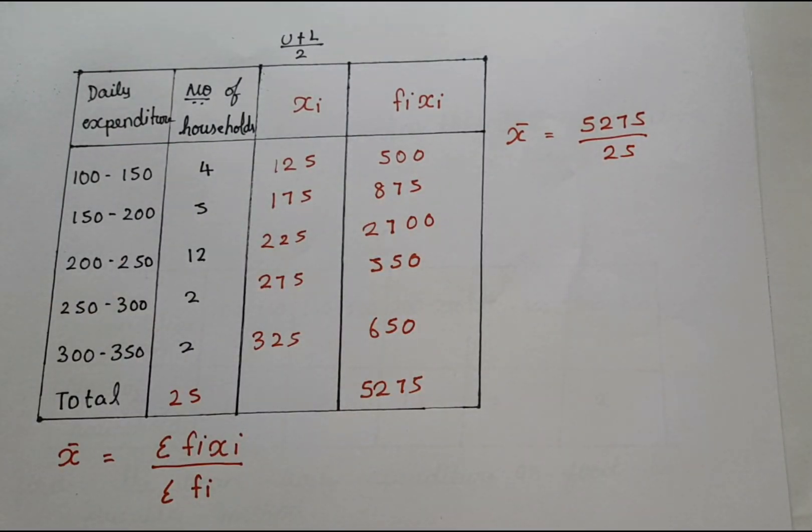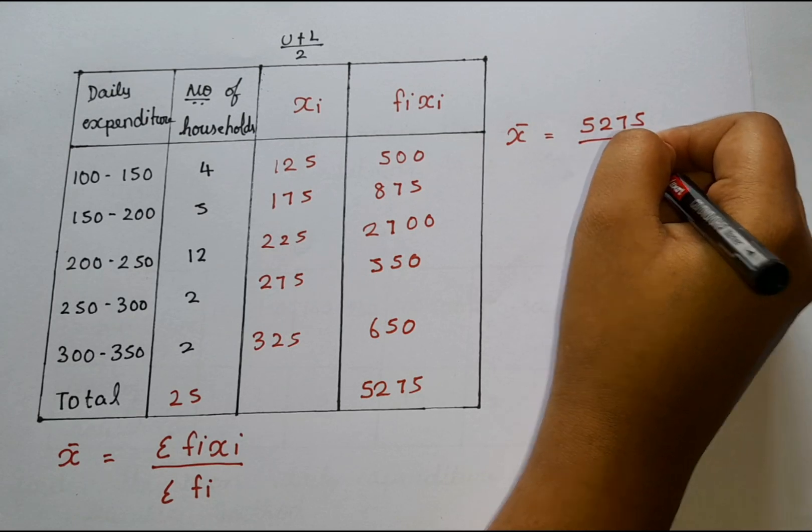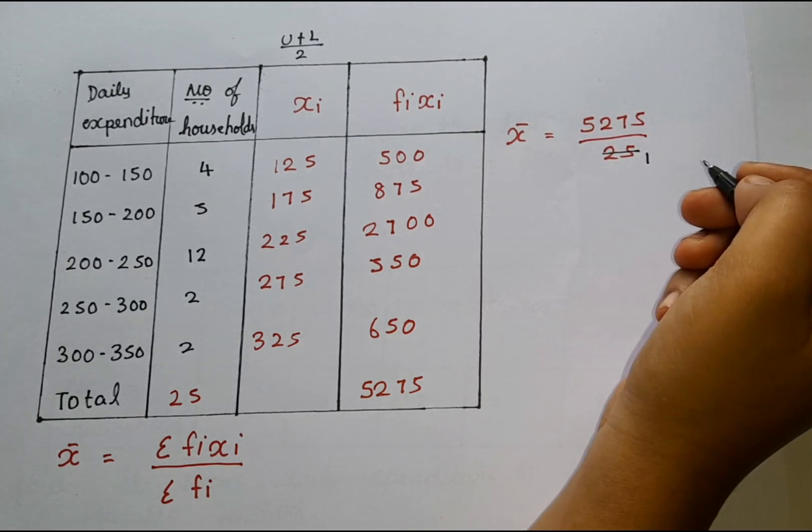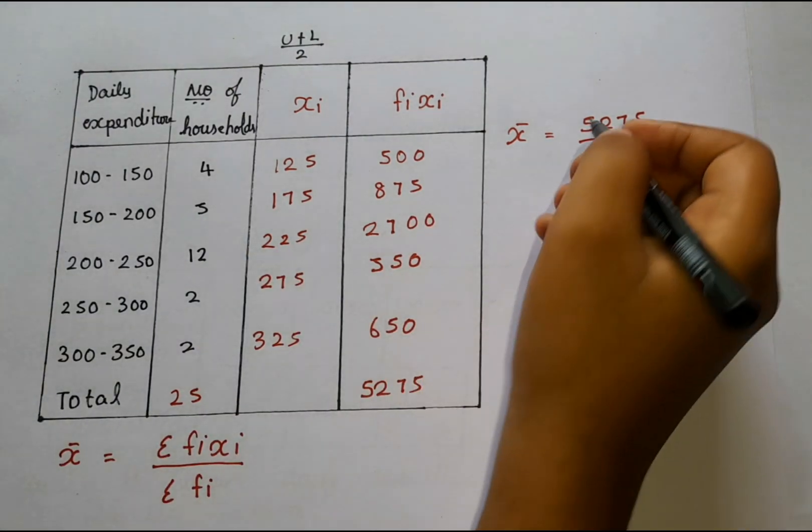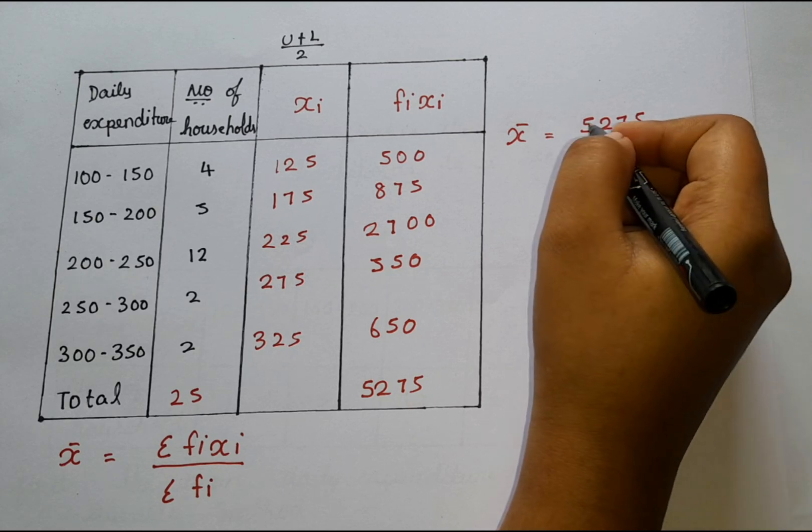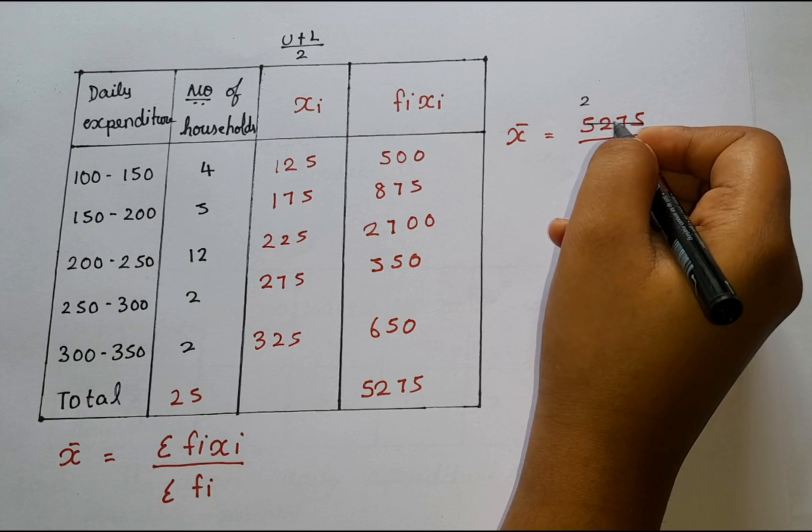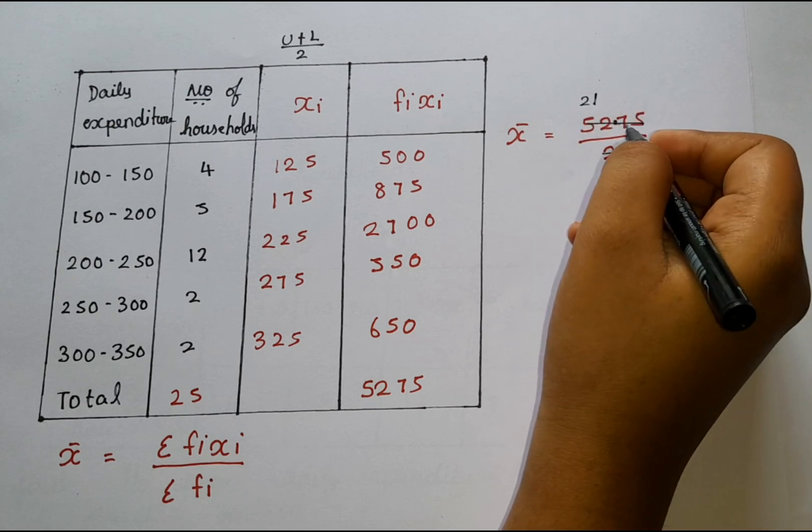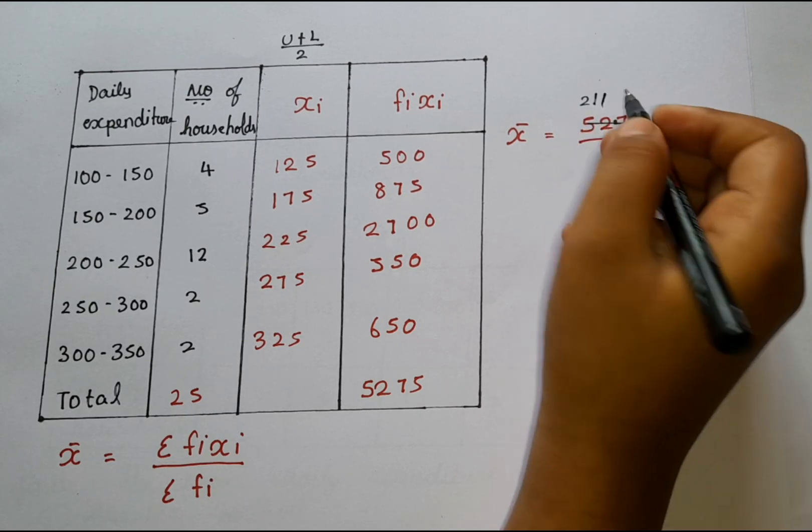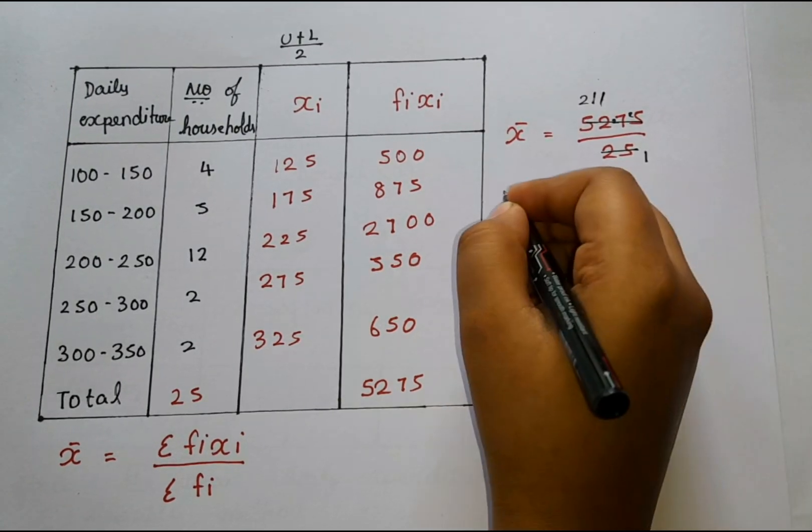So now what we can do is, we can actually cancel it. So let us cancel it. 125 is 25 and we will get 50 in 25 table. So we can cancel this also. So 25 2s are 50, balance 2. So when it comes to balance 2, it will be 27. And then 125 is 25, balance 2. Again 25, so 125 is 25.